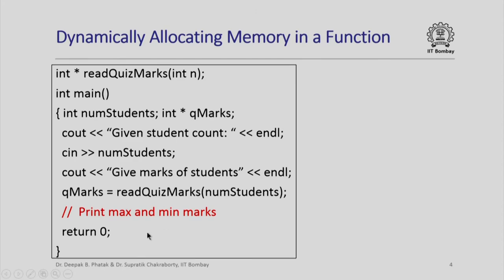Let us start with a simple function. In this function I basically want to read the quiz marks of a certain number of students and then do some computation on it, like finding the minimum and the maximum marks. I have an integer variable `num_students`. I ask for the number of students in the class and then call the function `read_quiz_marks`, which takes `num_students` as a parameter. What I expect this function to do is to dynamically allocate an integer array of the same size as the number of students, read in the marks of all the students into that array, and return to main a pointer to the first element in that array of integers.